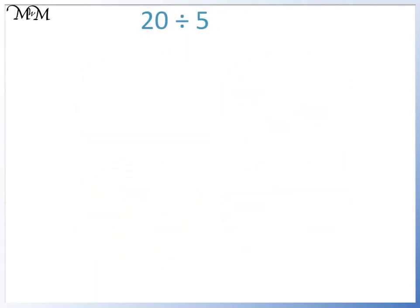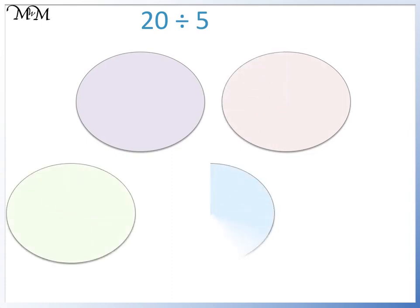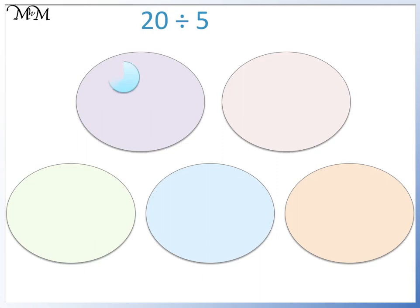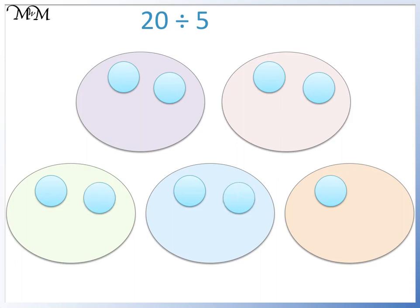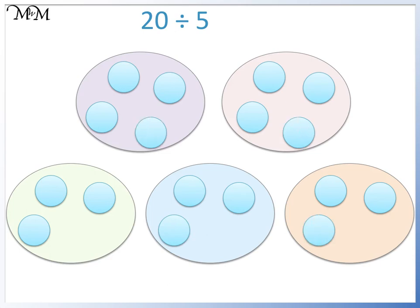Finally, we have twenty divided by five. We are dividing by five, so we draw five circles. We are dividing twenty by five, so we take it in turns drawing a counter in each circle and stop when we reach twenty: one, two, three, four, five, six, seven, eight, nine, ten, eleven, twelve, thirteen, fourteen, fifteen, sixteen, seventeen, eighteen, nineteen, twenty. We have four counters in each circle, so twenty divided by five equals four.